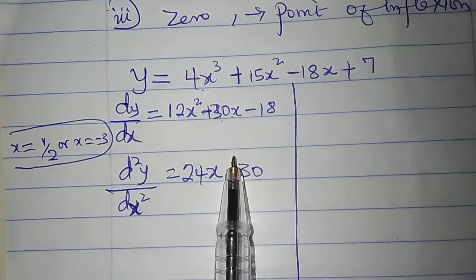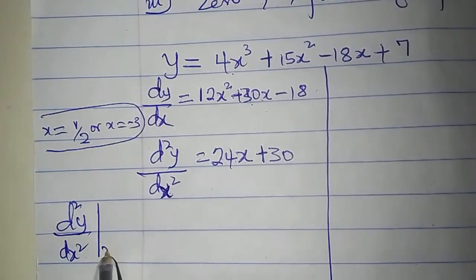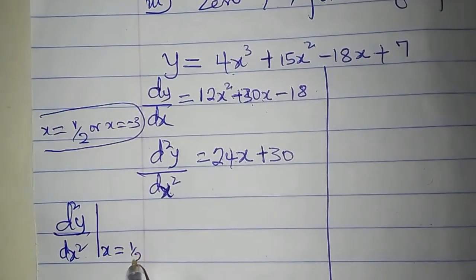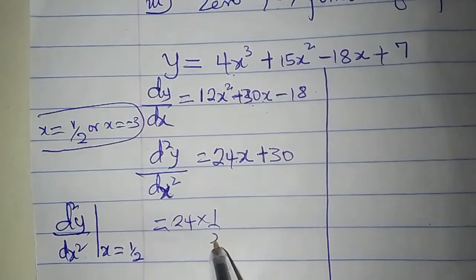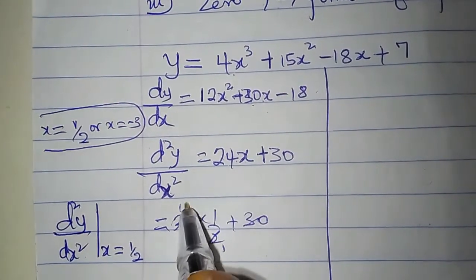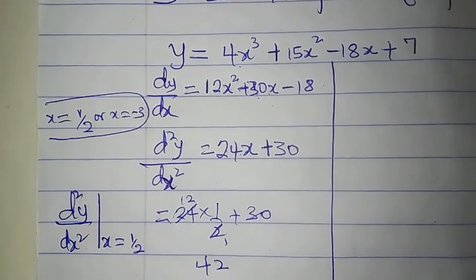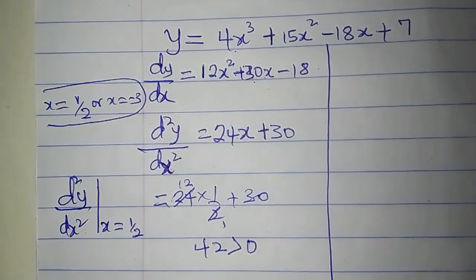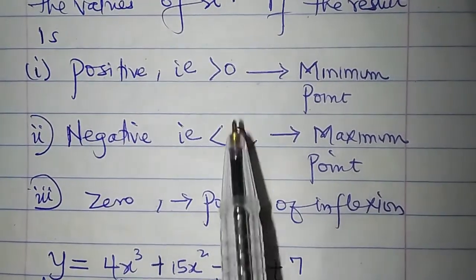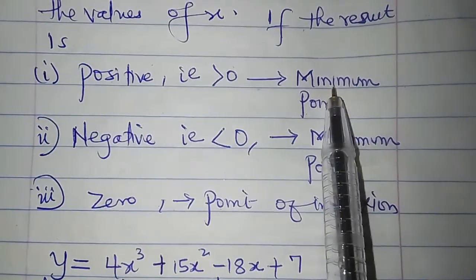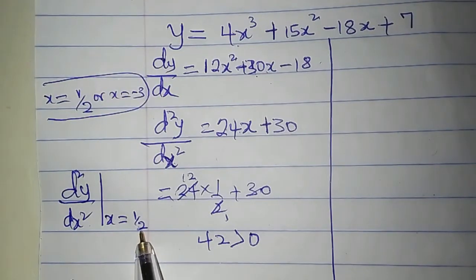Let us plug x = 1/2 into the second derivative. d²y/dx² at x = 1/2: 24(1/2) + 30 = 12 + 30 = 42. Since 42 is greater than 0 — that is, positive — the point is a minimum point. So x = 1/2 is a minimum point, which matches what we got in the first method.